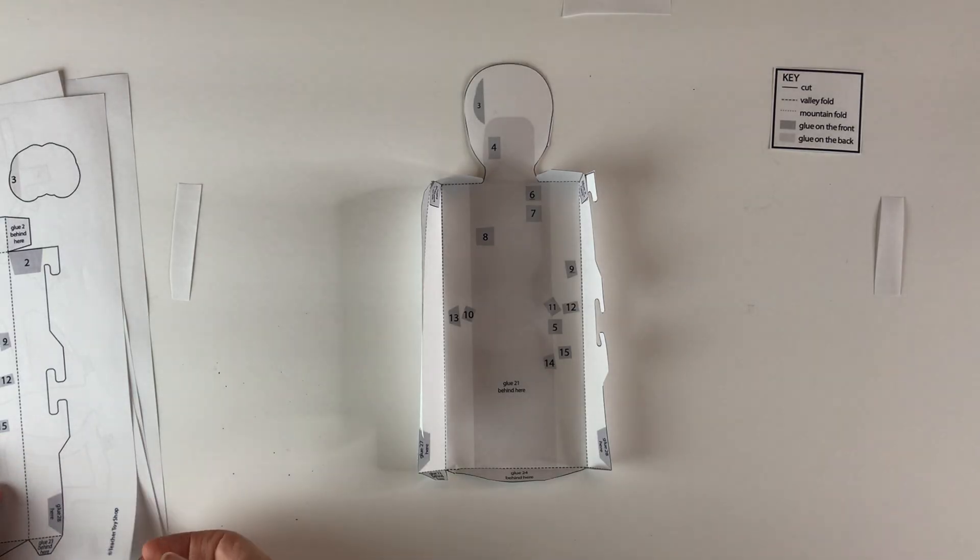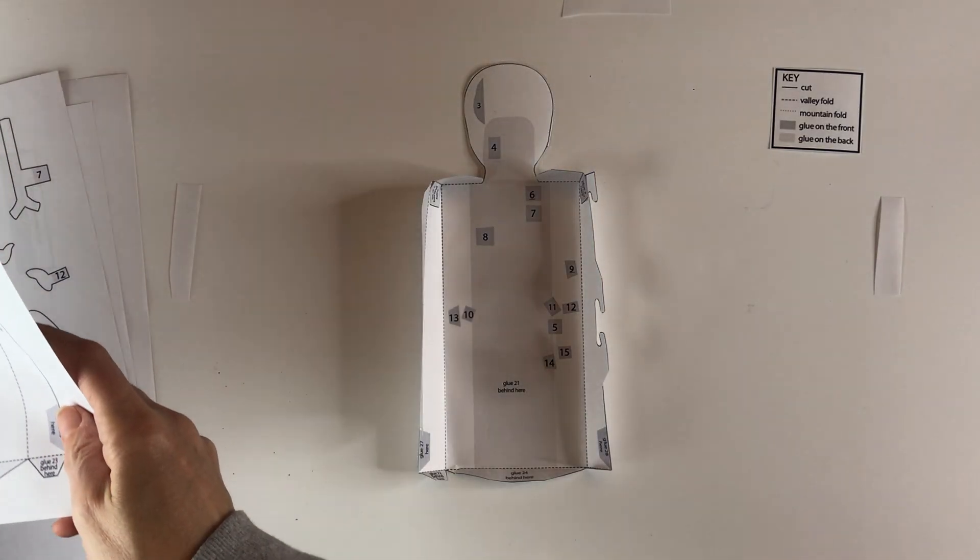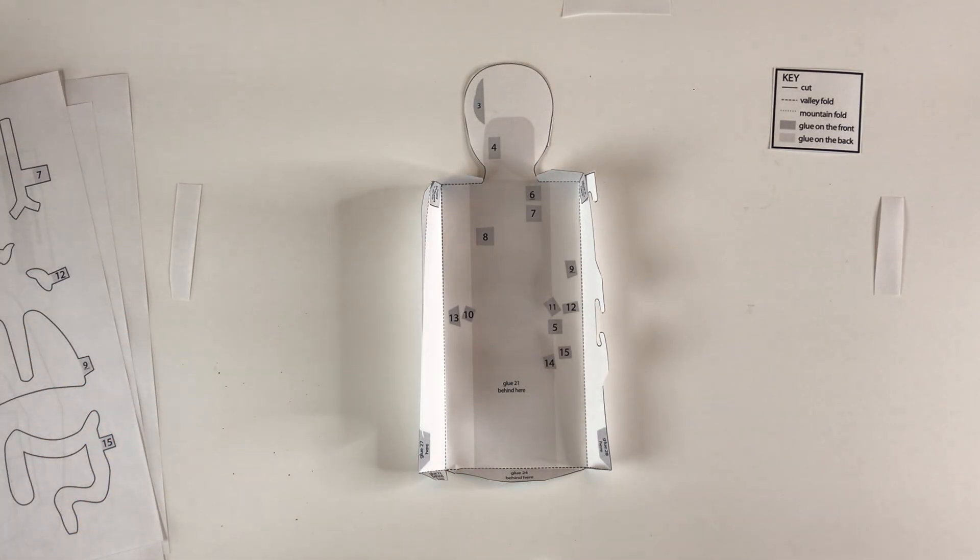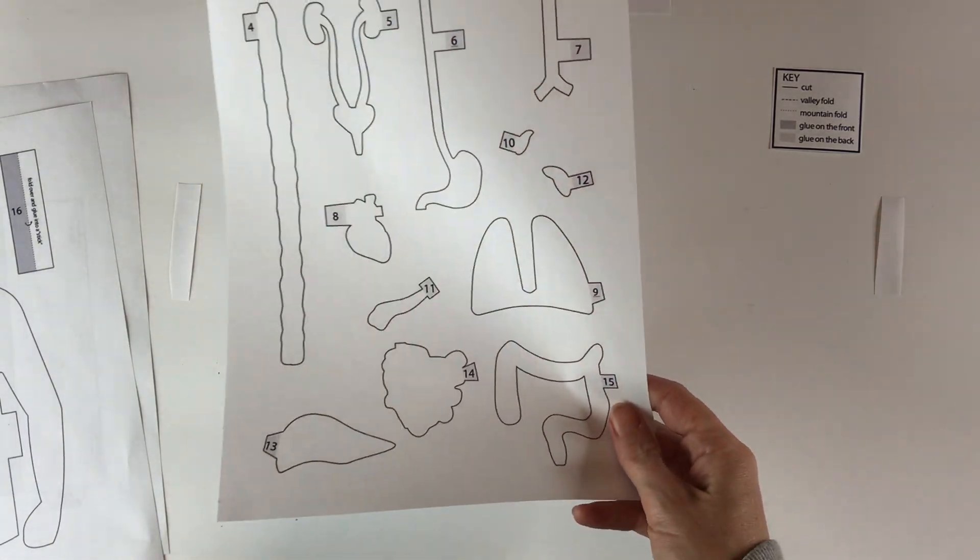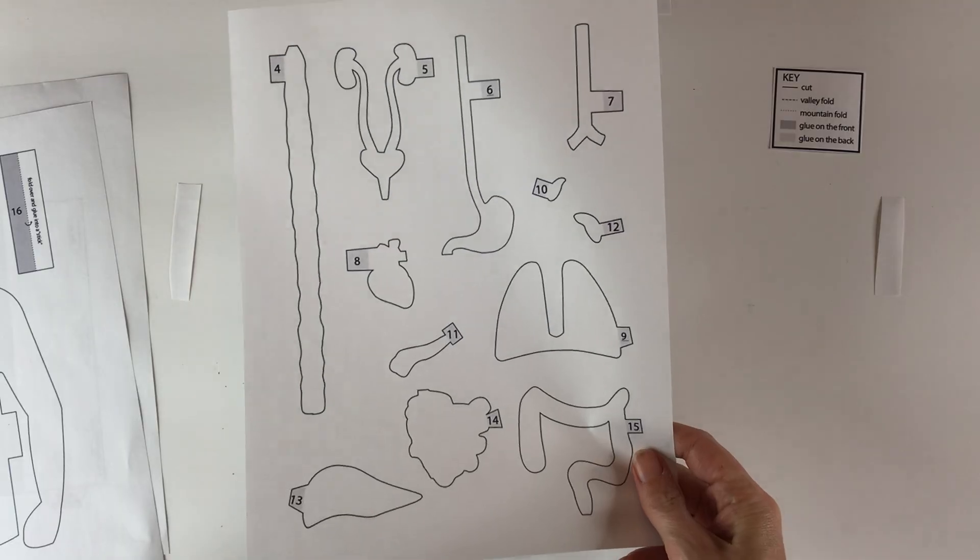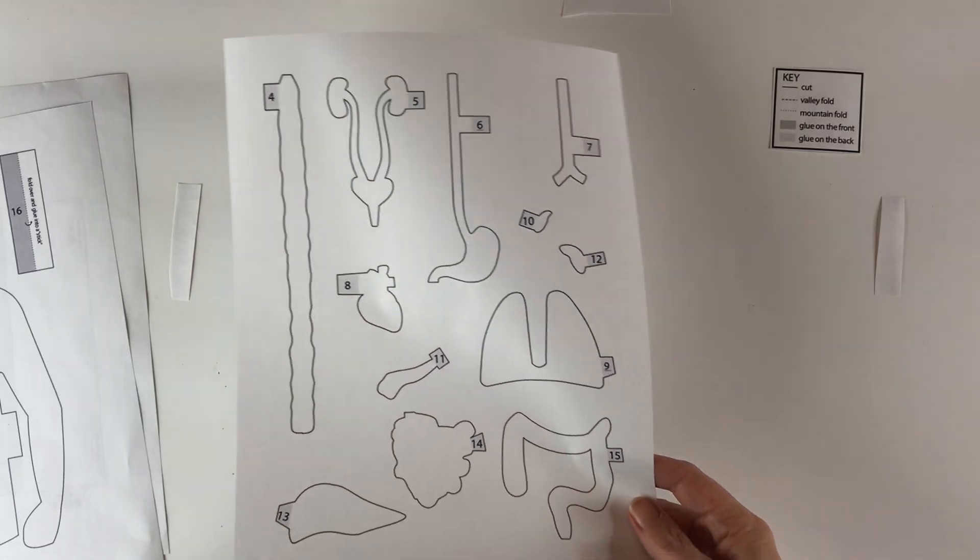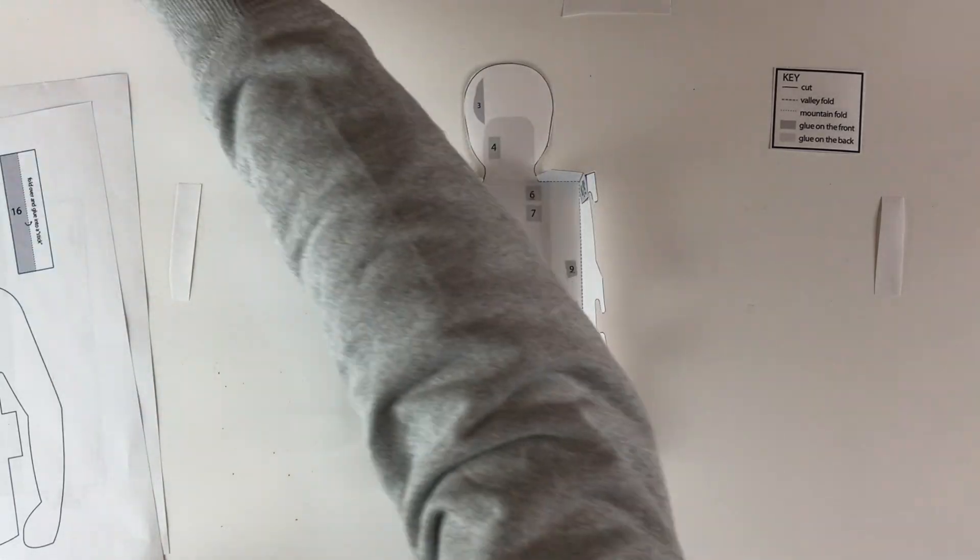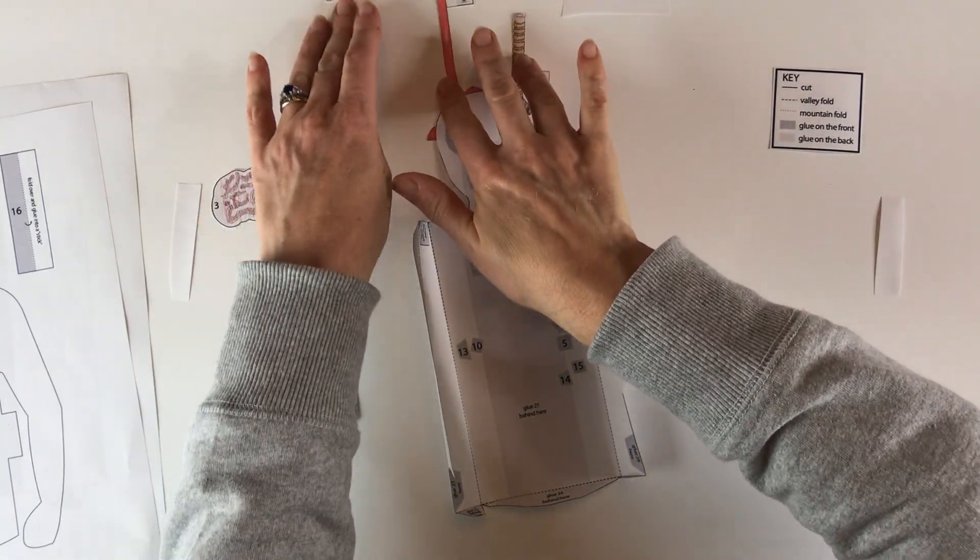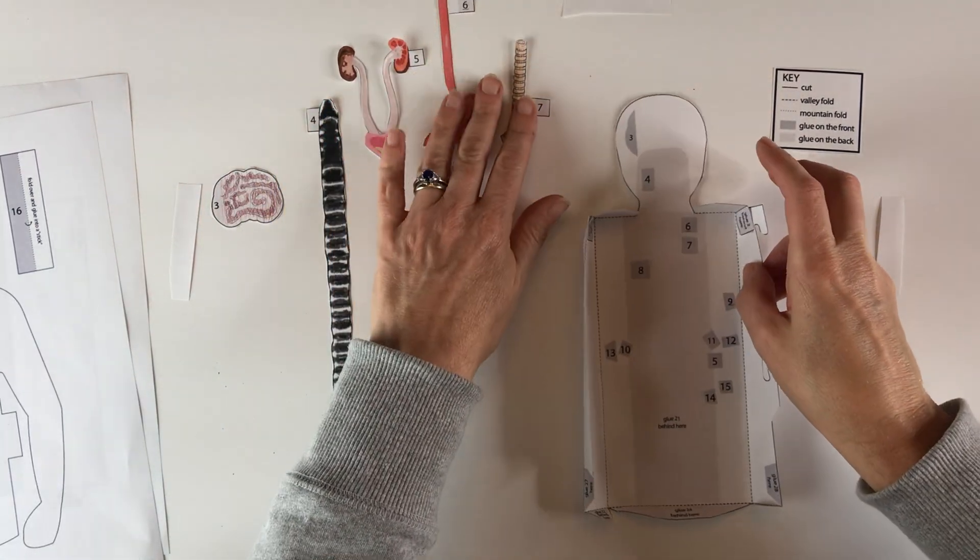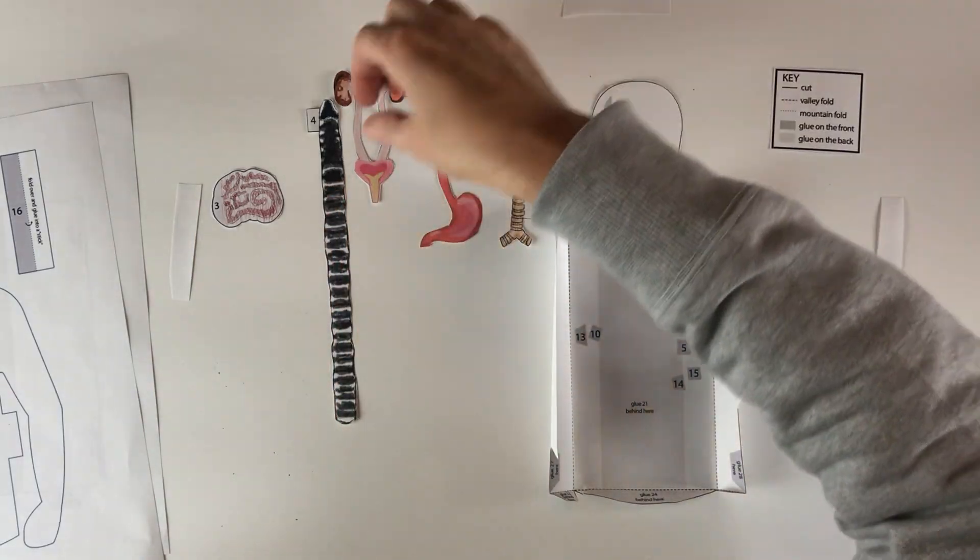Then the next step is to color and cut out your organs. So the organ page looks like this. I definitely recommend that you color them before you cut them out, although it certainly will work to cut them out first. As it happens, I have the organs already cut out and colored. So I'm going to go ahead and glue them in.